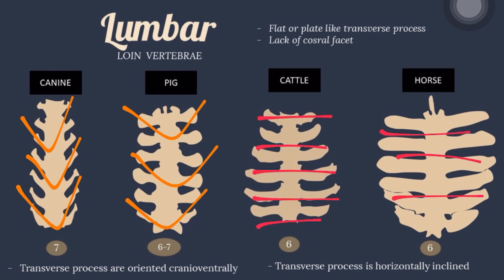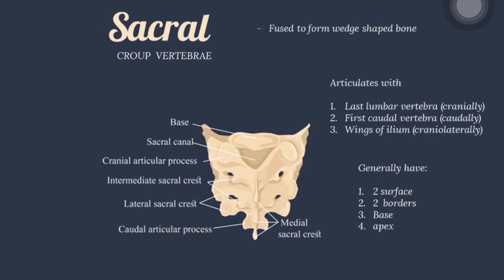The sacral vertebrae, or croup vertebrae, are fused to form a single wedge-shaped bone — the sacrum — which articulates with the last lumbar vertebra cranially, the first caudal vertebra caudally, and the wings of ilium cranio-laterally. Generally, the sacrum has 2 surfaces, 2 borders, a base, and an apex.